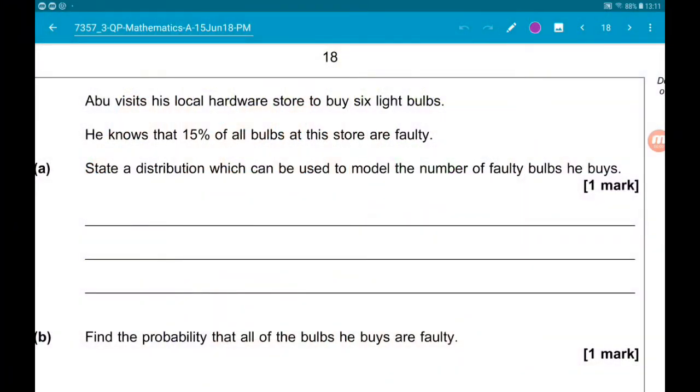Hey question 15. Abu visits his local hardware store to buy six light bulbs. He knows that 15% of all the bulbs at this store are faulty.